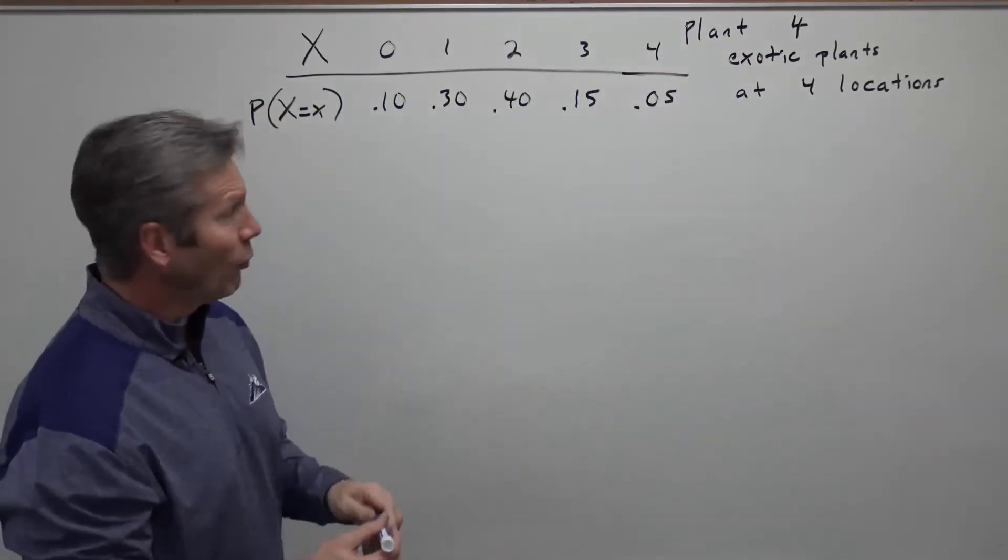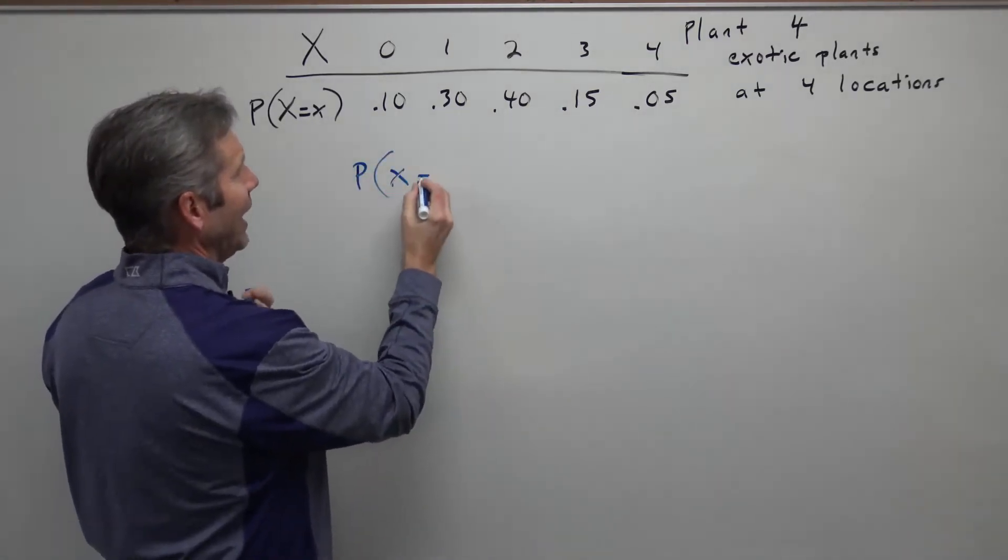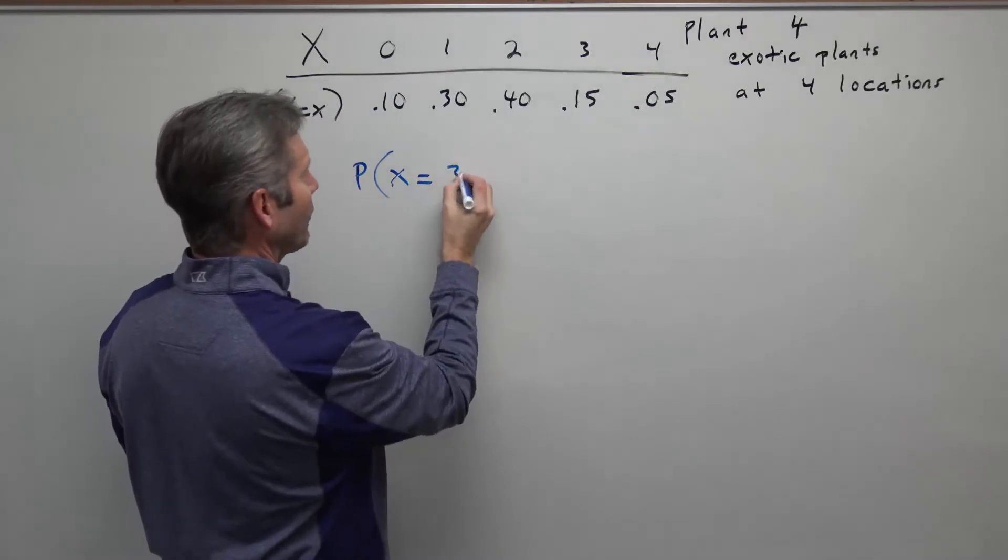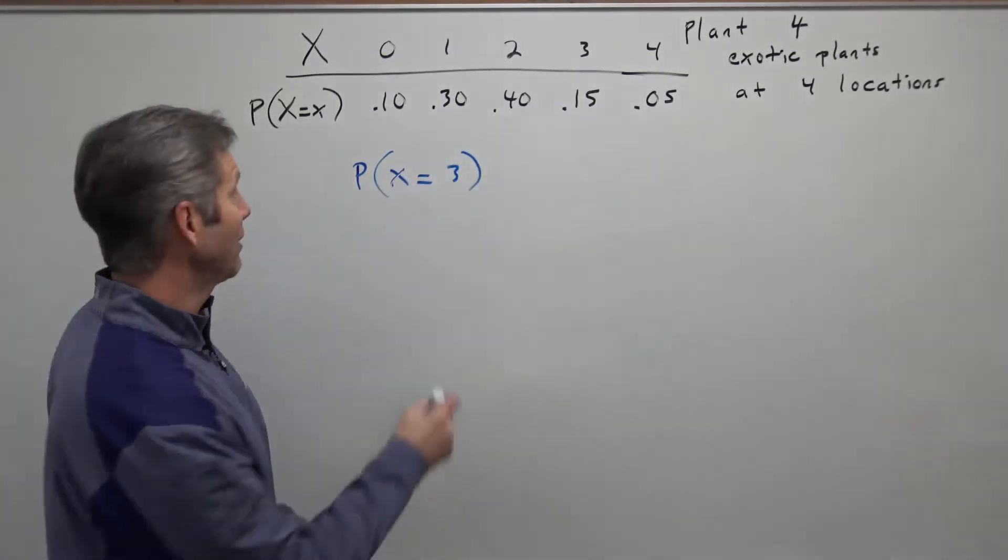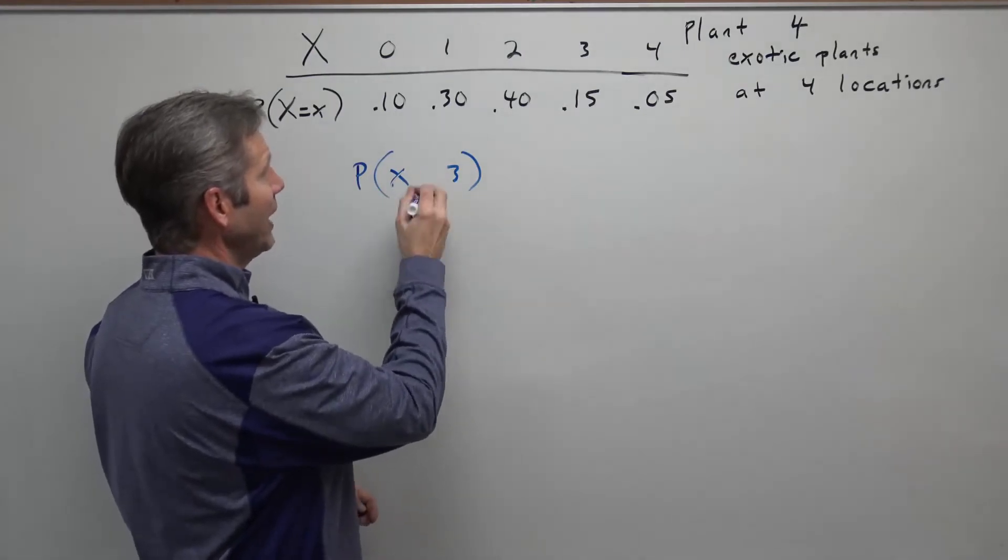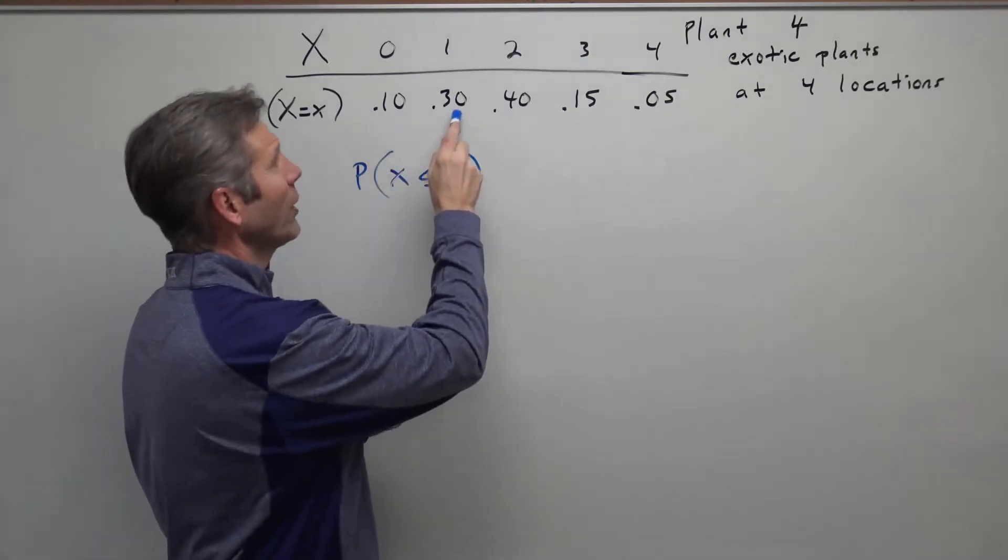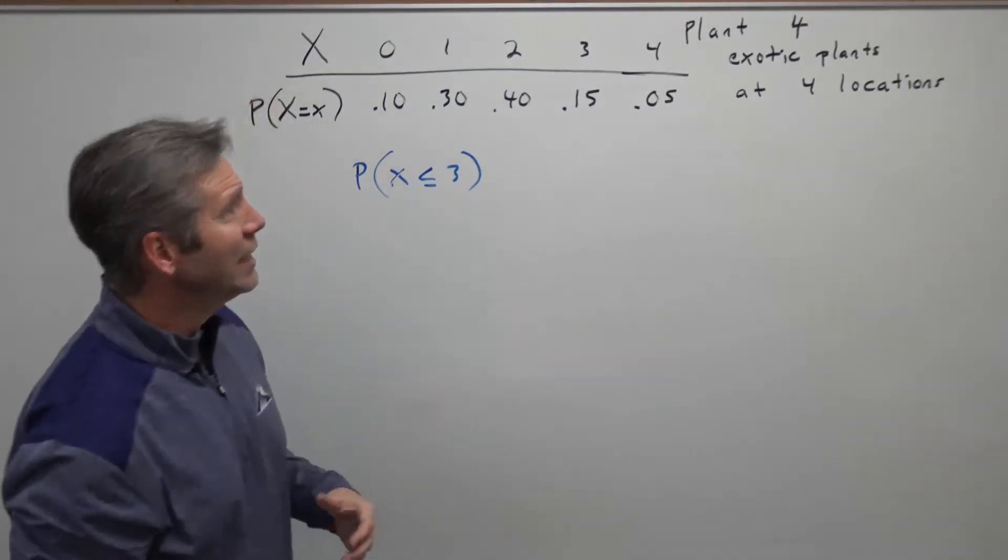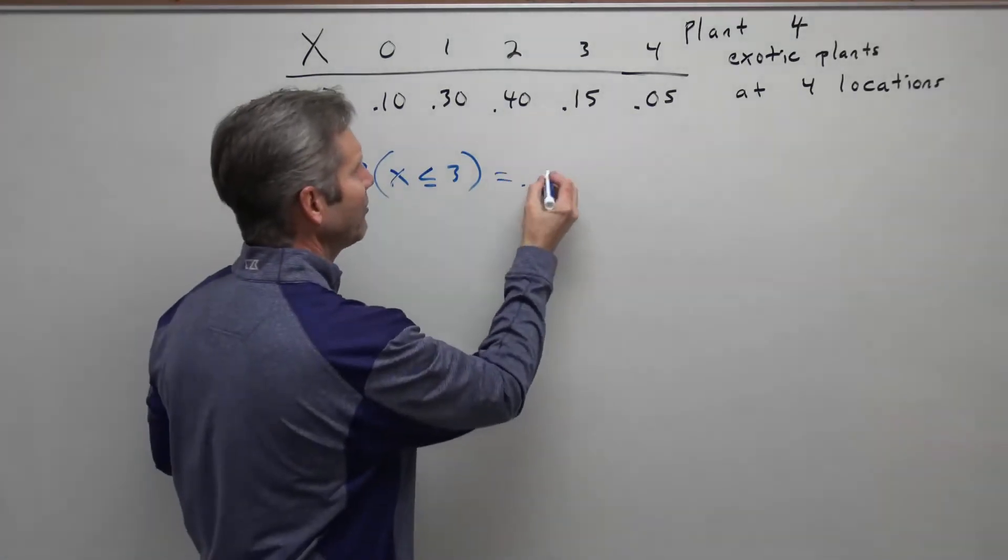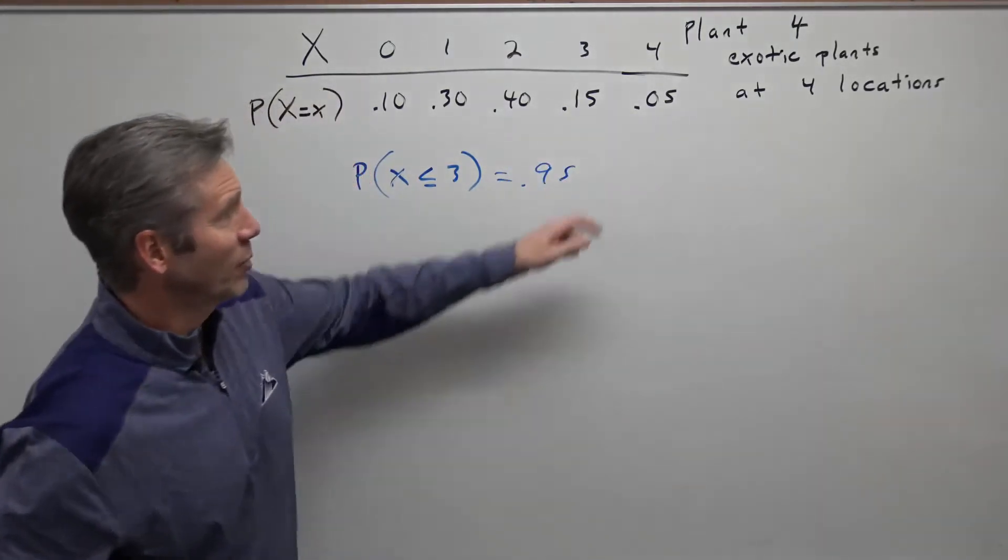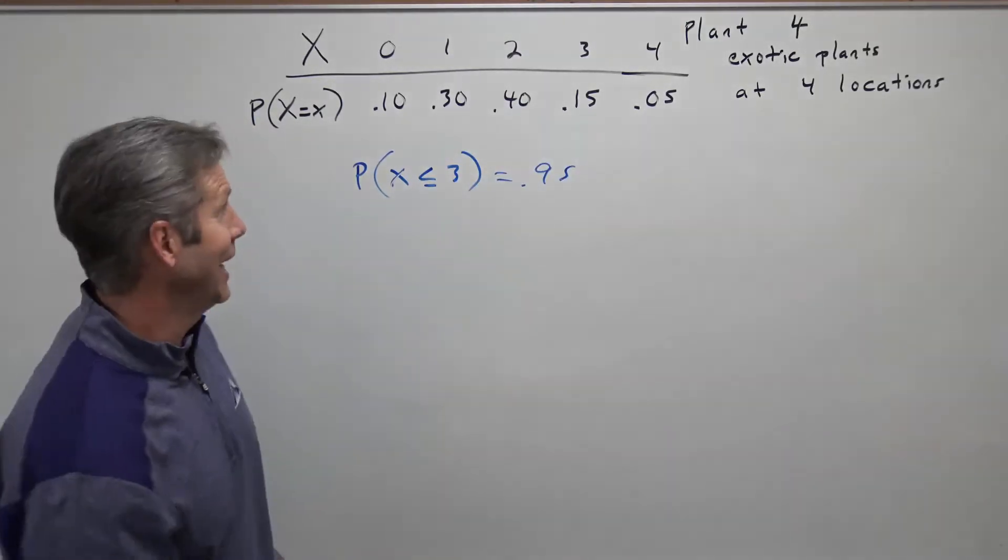Now we want to find the probability that X equals three. What's the probability that we get three successes? Just right there, 0.15. What's the probability that X is less than or equal to three? That means we could have zero, one, two, or three plants make it, so we add all those up and that gives us 0.95. The quickest way to get that is to realize you can do one minus 0.05, the only thing that can't happen.